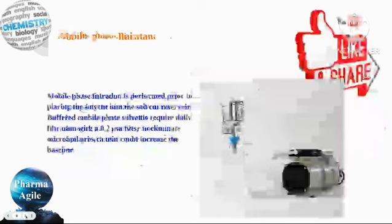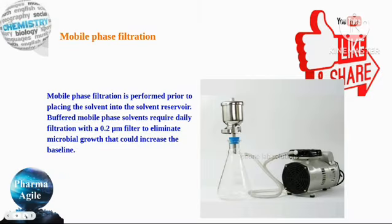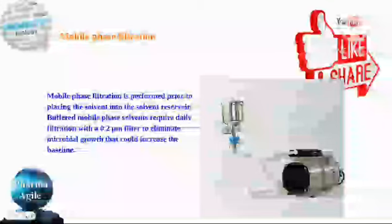Here we are going to filter the mobile phase. We have a funnel in the setup. We will place a flask to collect the filtered solvent and reserve it. Now we are going to connect the pump and set it up for vacuum. We will then carry out the vacuum filtration procedure.